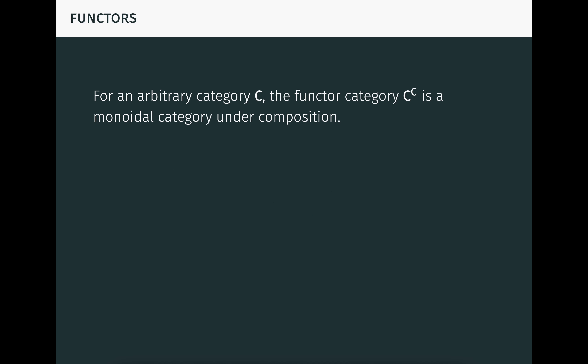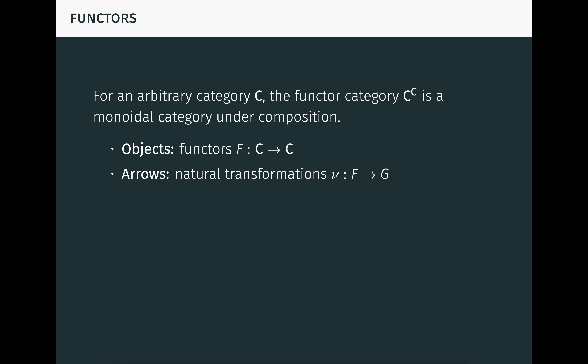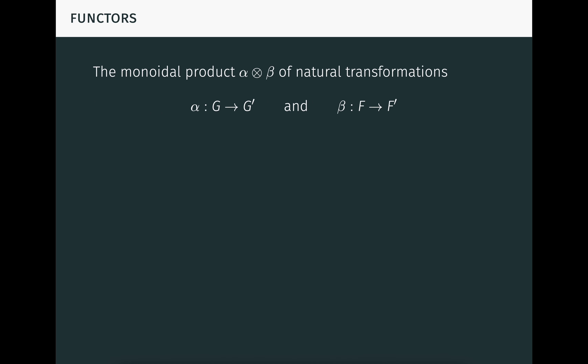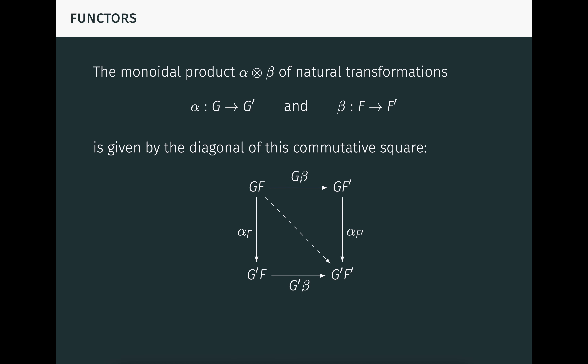For an arbitrary category C, the functor category C to C is a strict monoidal category under composition. This category has for objects functors on C, and for arrows, natural transformations between those functors. The objects are called endofunctors. The monoidal product of two endofunctors is given by composition, which we know is associative and unital. The monoidal product of natural transformations is a little harder to describe, but is given by the diagonal of this commutative square. In particular, we have important special cases when one of the natural transformations is an identity.